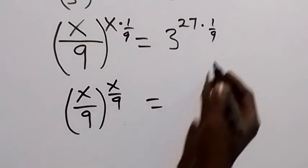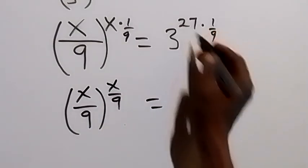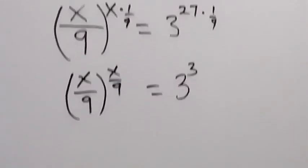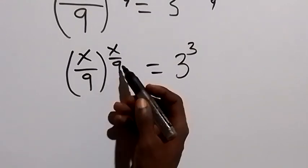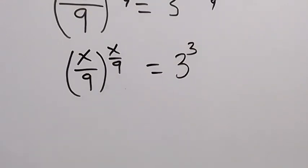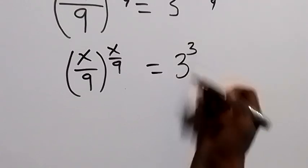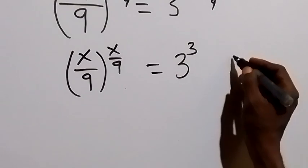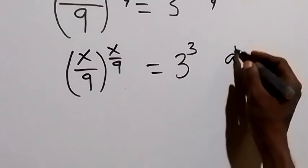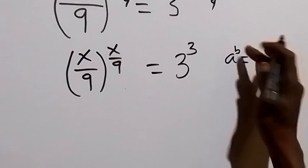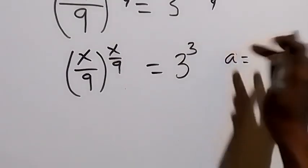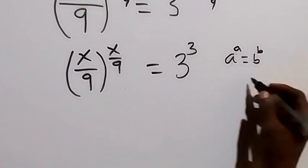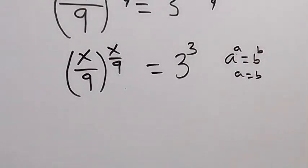This equals 3 raised to power 3, since 9 divided by 9 is 1 and 27 divided by 9 is 3. From here we have a number raised to the power of the same number on both sides. When we have a raised to power a equals b raised to power b, we can say a equals b.